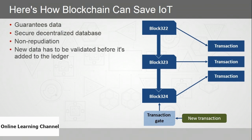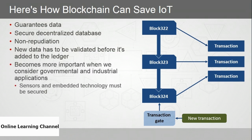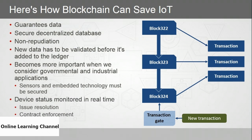The link between IoT and blockchain becomes even more important when we consider governmental and industrial applications. Cities and governments use connectivity for security cameras, traffic lights, power generation monitoring, water treatment sensors, and more. Sensors and embedded technology must be secured, and blockchain may be a better solution. Device status, monitored in real time, can also benefit from blockchain through issue resolution and contract enforcement.